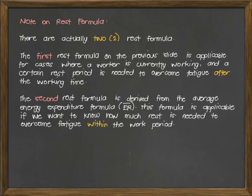The second formula is derived from the average energy expenditure formula, or ER bar. This formula is applicable if we want to know how much rest is needed to overcome fatigue within the work period. The two formulas are different: the first rest formula covers working followed by rest with nothing else; the second rest formula applies when given a total work duration and we need to determine how much should be divided between resting and working within that duration.